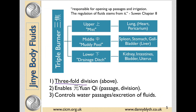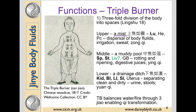The triple burner represents this threefold division. It enables the Yuan Qi's passage but also its division to go and do its different tasks, and it controls the water passages and the excretion of fluids. The upper burner is like a mist with the dispersal of body fluids, dominated by the lungs and the Zhong Qi. The middle burner is like a muddy pool with its rotting and ripening, dominated by the spleen, the stomach, and the Ying Qi. The lower burner is like a drainage ditch where the intestines, kidney, and bladder separate the dirty fluids and excrete, dominated by Yuan Qi.